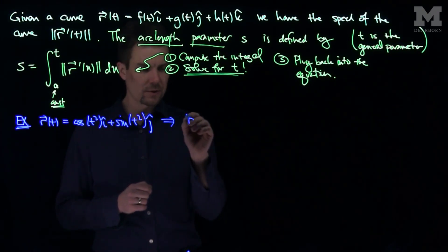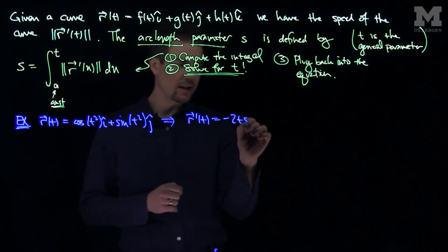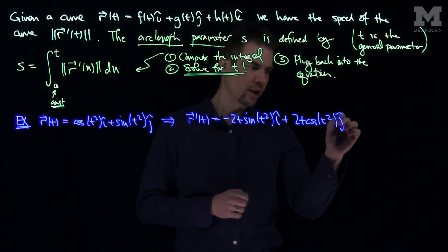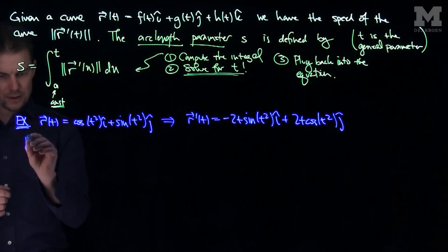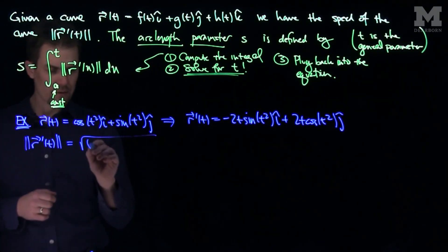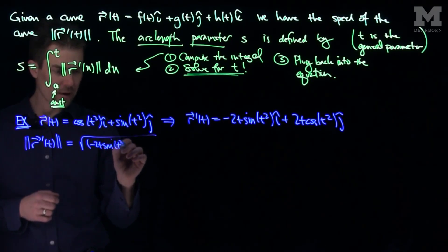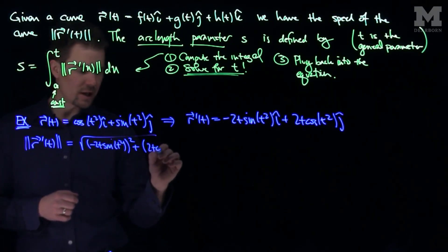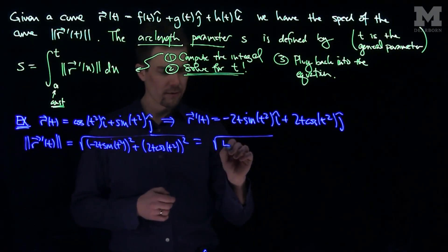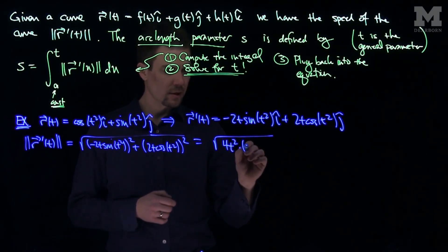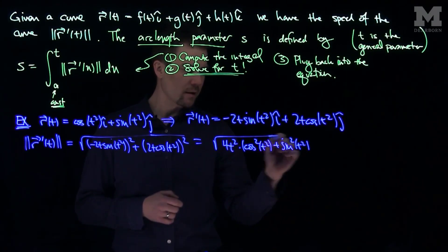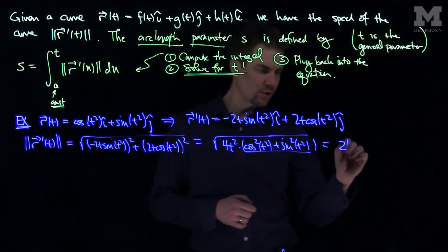If I compute the speed of this curve, R prime of t is negative 2t sine of t squared i-hat plus 2t cosine of t squared j-hat. The speed, the length of R prime of t, is equal to the square root of negative 2t sine of t squared squared plus 2t cosine of t squared squared. This becomes the square root of 4t squared times cosine squared of t squared plus sine squared of t squared, and that expression equals 1, so this is just 2 absolute value t.